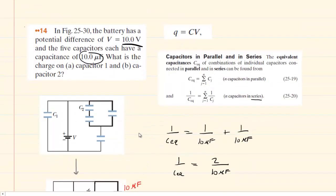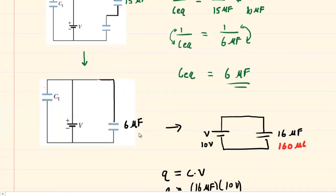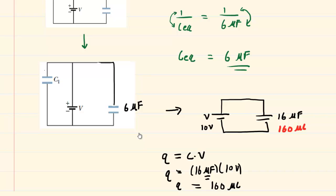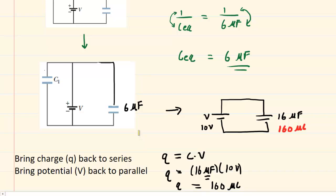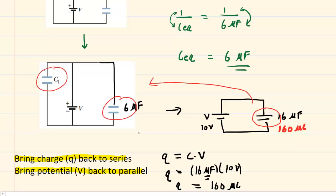To continue answering the question — getting the charge on capacitor 1 and capacitor 2 — you need to work your way backwards through the circuit. When moving backwards, follow these rules: bring the potential with you when going back to a parallel arrangement, and bring the charge with you when going back to a series arrangement. Starting from our single equivalent capacitor and working back to two parallel capacitors, we bring the 10-volt potential, so each capacitor has 10 volts.